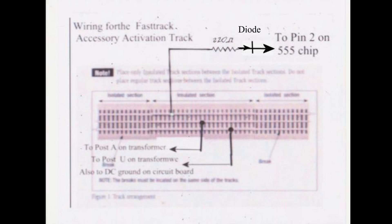The wire from the middle rail goes to point to post A on the transformer. And finally, the wire from the continuous outside rail goes to both post U on the transformer and also to the DC ground on the circuit board.